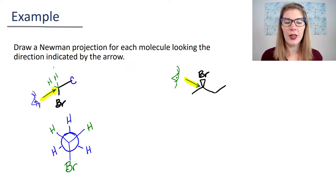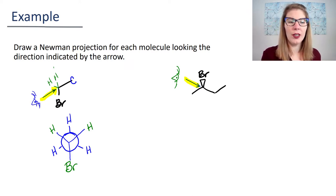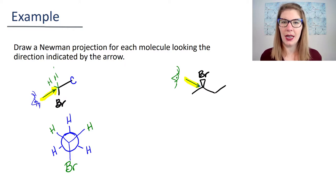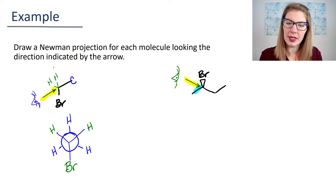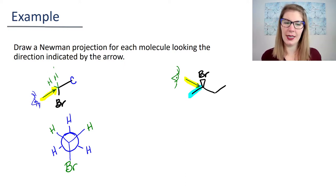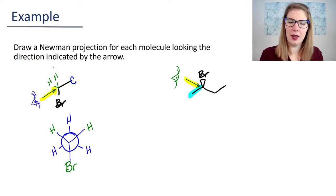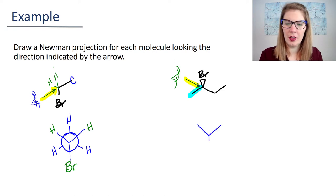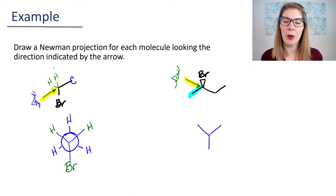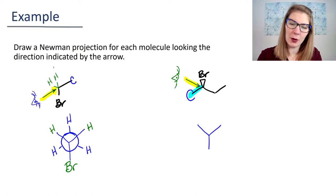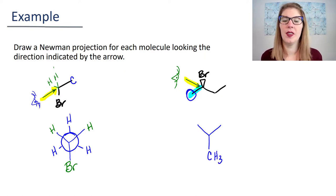For this one, I'm going to draw my Newman projection starting with a downward-pointing bond, because this bond is pointing downward. At the end where I'm circling, that's a CH3.